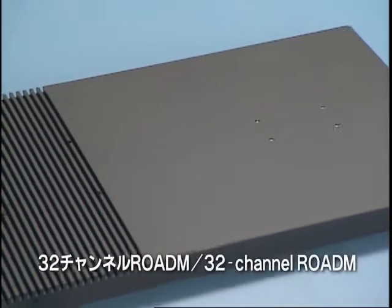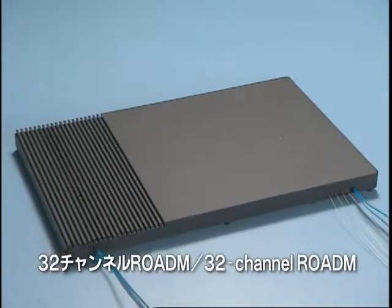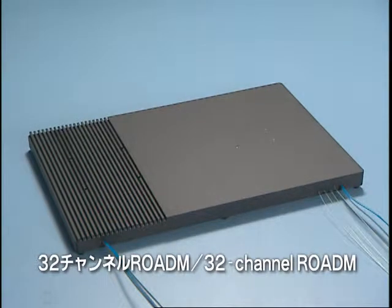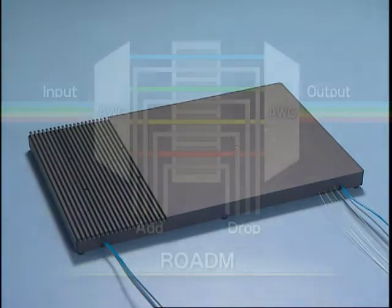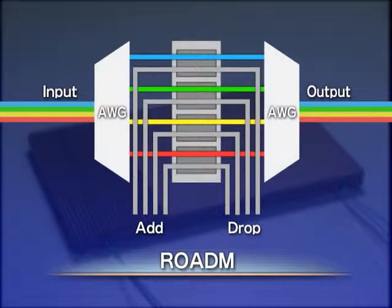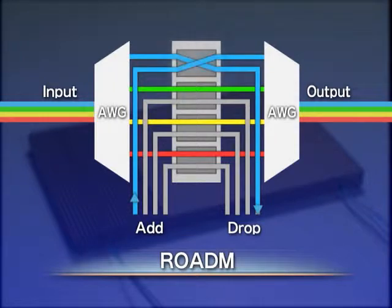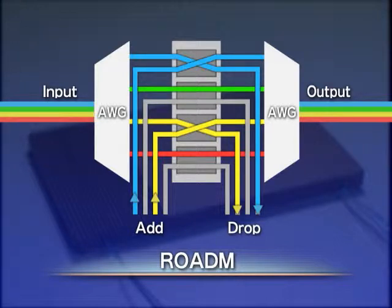Also, a 32-channel RODEM is made by combining the Mach-Zender interferometer thermo-optic switches and AWGs. RODEM stands for Reconfigurable Optical Add-Drop Multiplexer. By controlling optical switches, RODEM extracts arbitrary wavelength optical signals from wavelength division multiplex optical signals, and can also insert them.